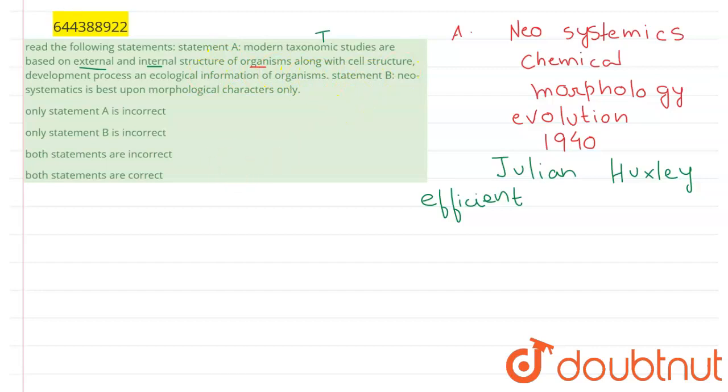The second statement given is: neosystematics is based upon morphological characters only. As I said, neosystematics are the modern method of taxonomy, and here all aspects are considered. The kind of taxonomy where only the morphological aspects are considered and organisms are grouped according to observable traits is known as phenetics.